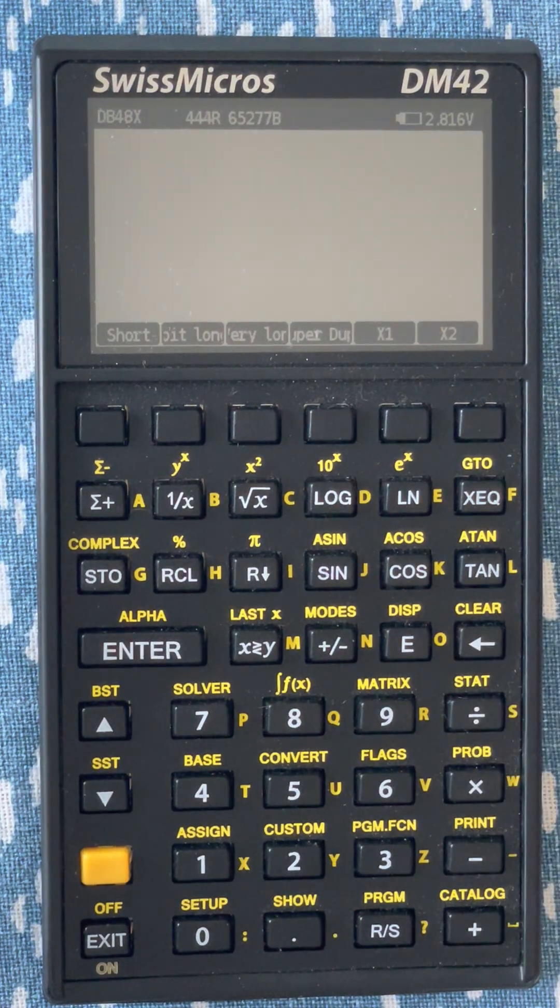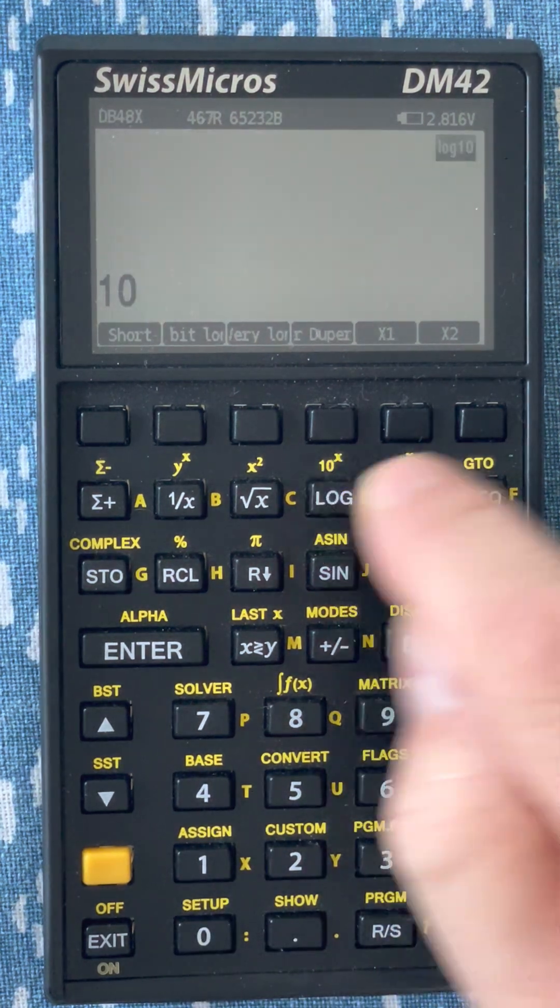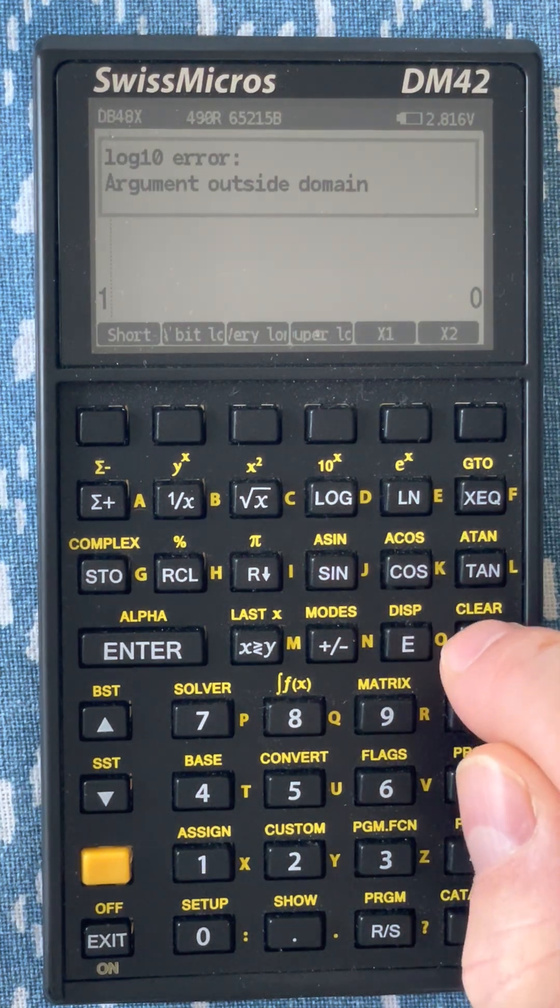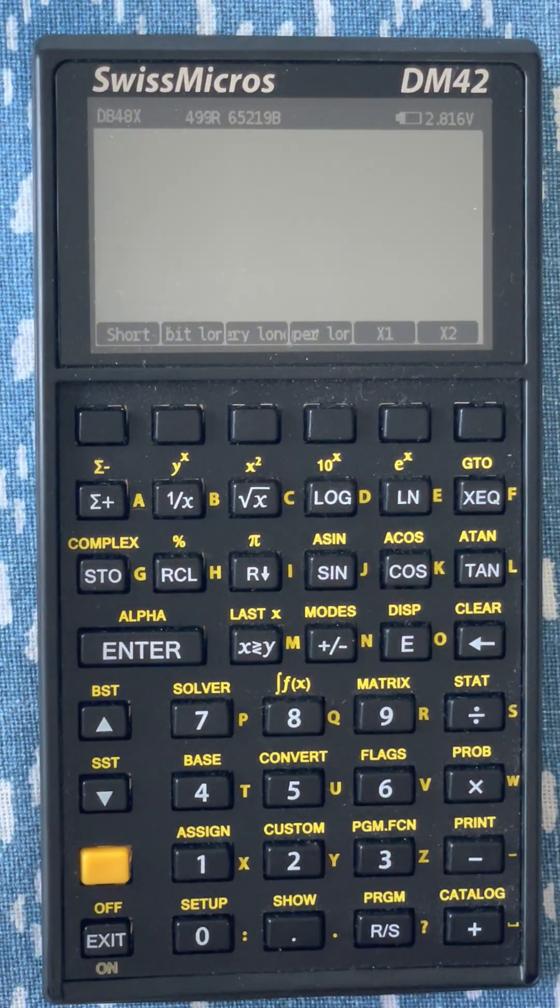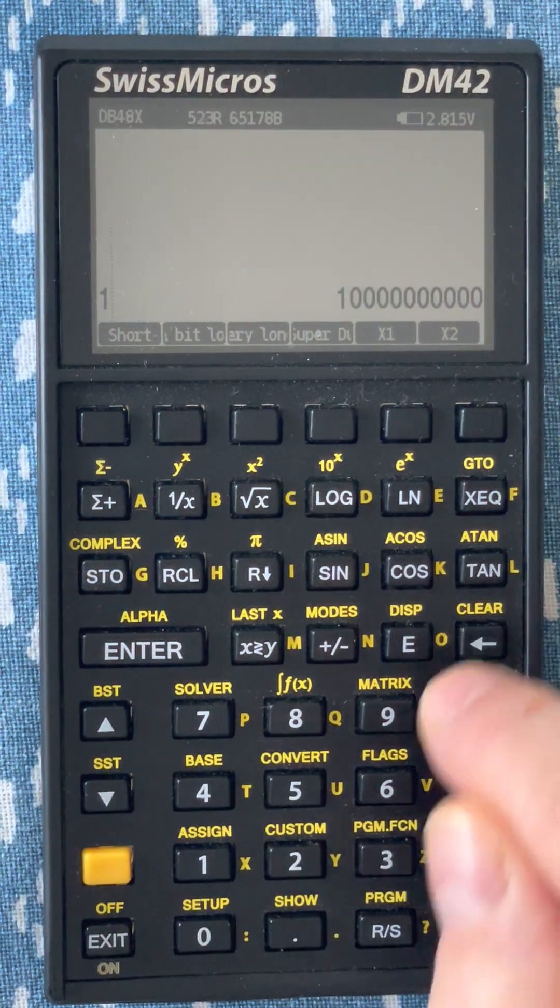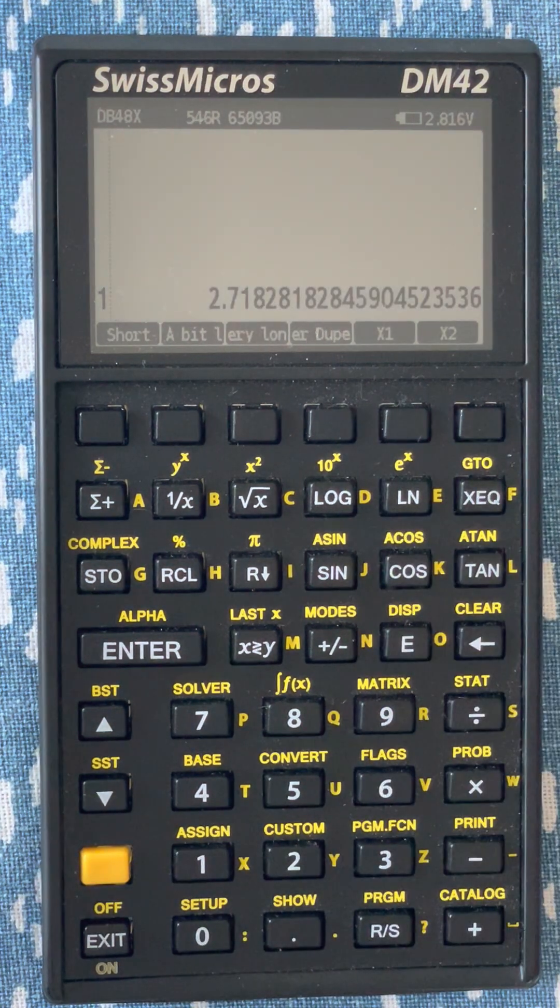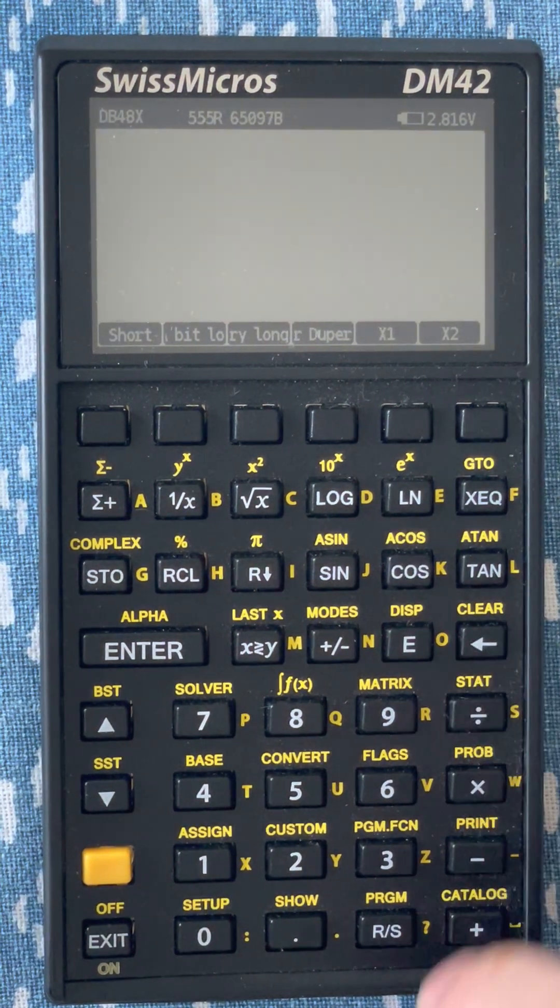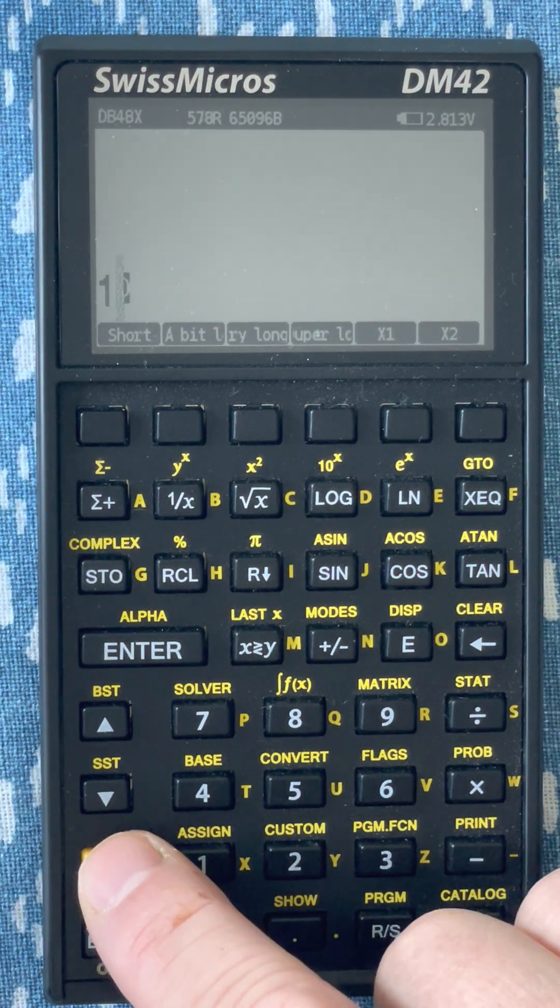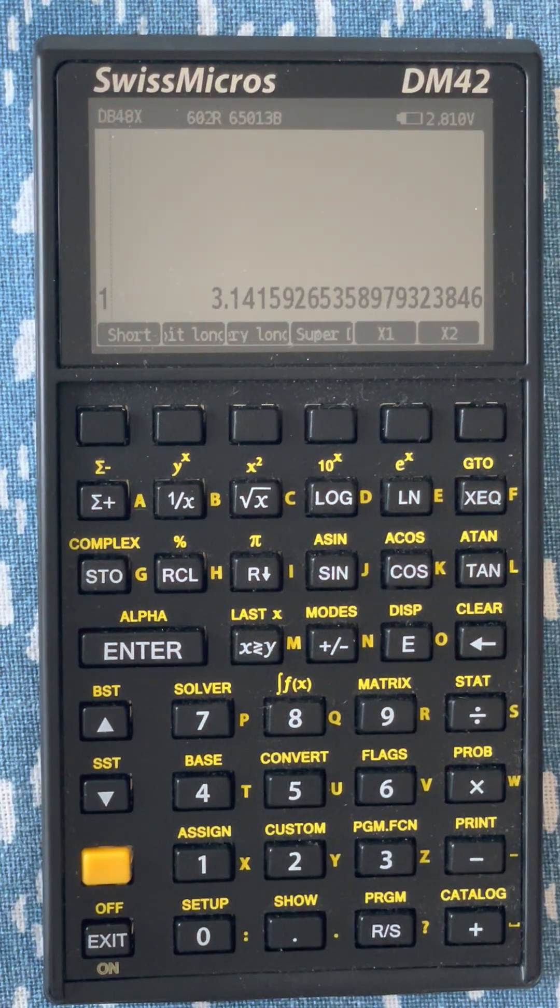So the basic operations work. We have support for some complex functions like logarithm. You can see that there is an error system that checks if the arguments are valid. You can do exponentiation. That's the value of E. You have trigonometric functions as well. So if I do this times 4, I get pi.